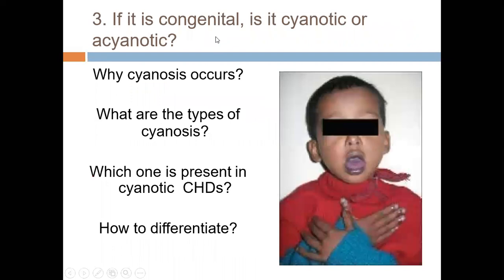The next question is: is this case cyanotic or acyanotic? Cyanosis occurs because of decreased oxygen saturation. Clinical cyanosis is defined as saturation below 85% (or 87% in some books). Between 85% and 95% there is cyanosis but it's not called clinical cyanosis — it's detected by pulse oximetry. Above 95% is normal.